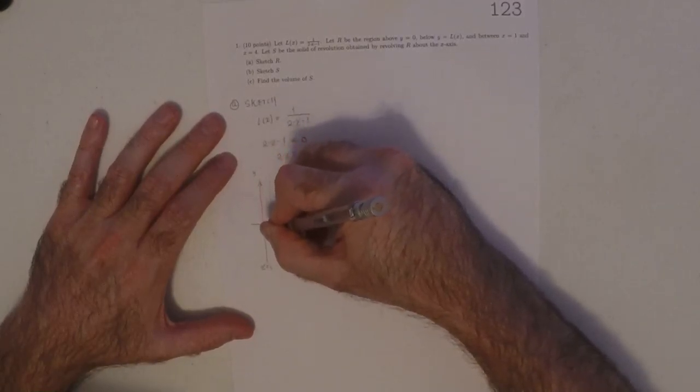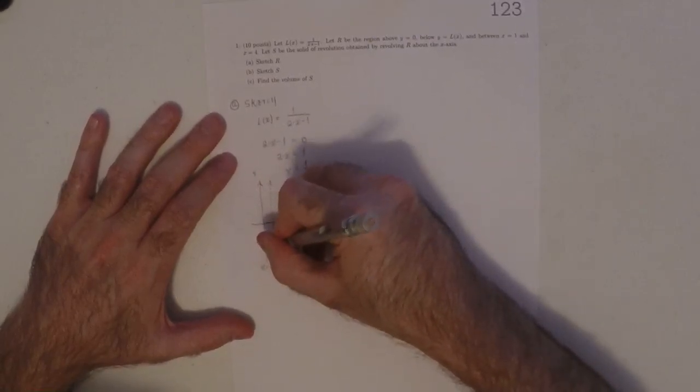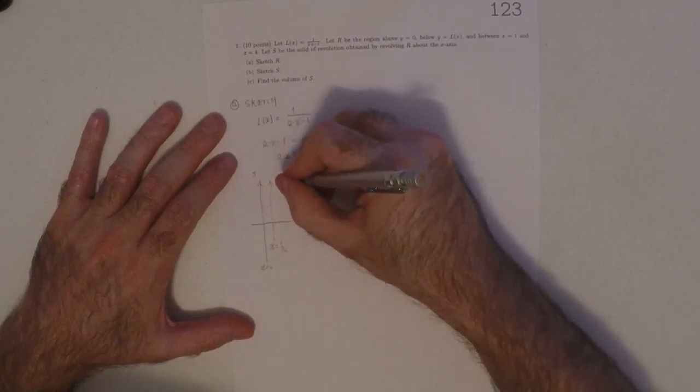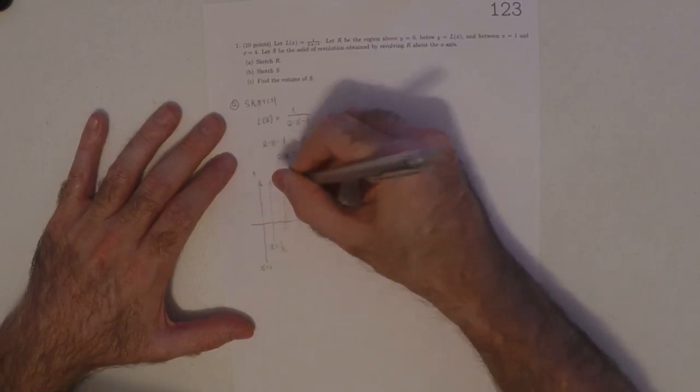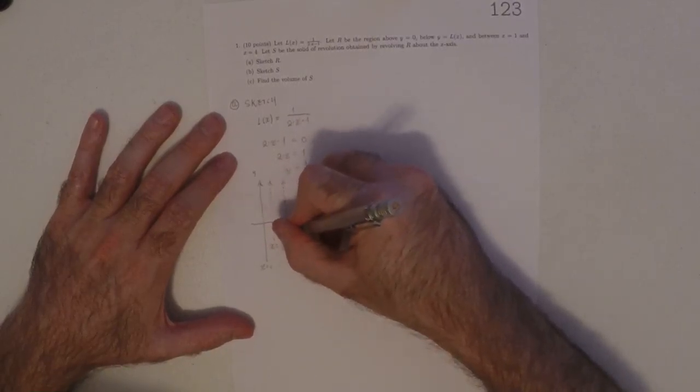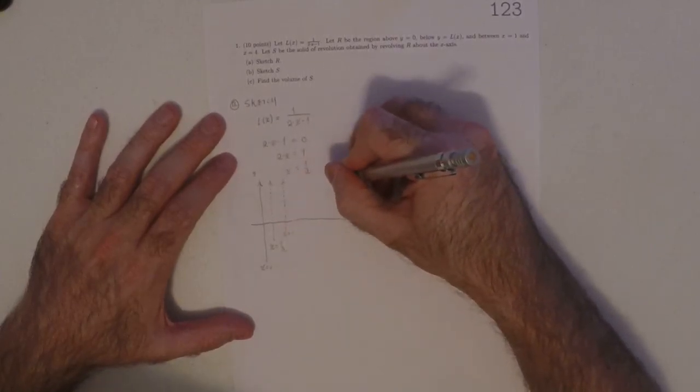Then at x is 1, that's one of the boundaries of integration. So this is x is 1. And then 4, so if that's 1, you know, 4 is over here.